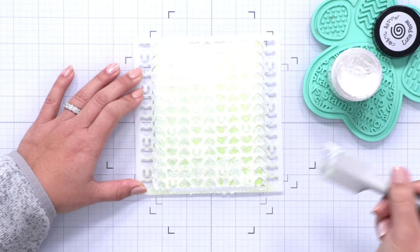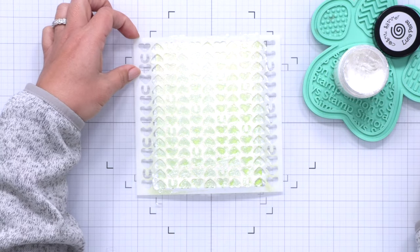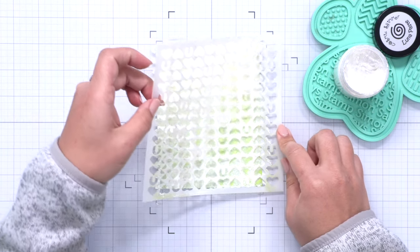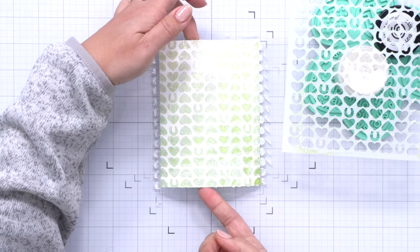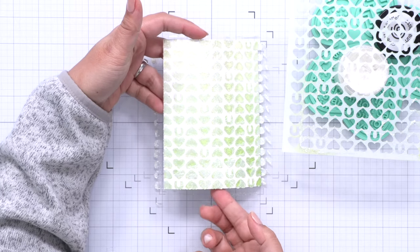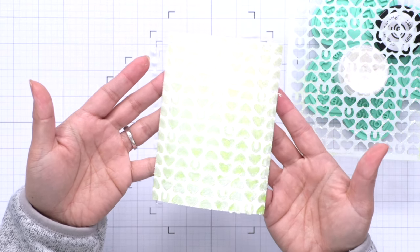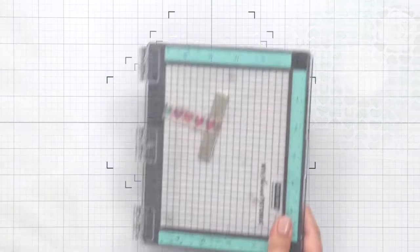When I'm happy with the spread of that paste over my card panel I'm going to lift away the stencil and I'm going to clean it all up and as you can see here you have a really shimmery luminescent look to that background but you still see that color coming through.